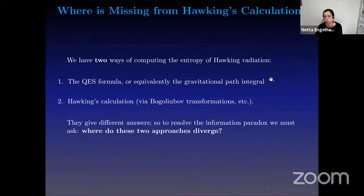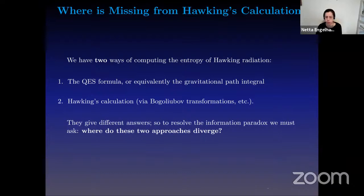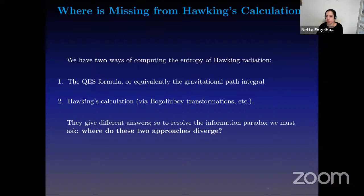One way of approaching this is to ask what's missing from Hawking's calculation. We have two ways of computing the entropy of Hawking radiation: we can use the quantum extremal surface formula, or equivalently the gravitational path integral, or we can use Hawking's calculation via Bogoliubov transformations. Of course, they give different answers. So we want to know where do these two approaches diverge? If we were to put these two approaches on the same platform, how would they differ from one another? That's step one towards understanding where Hawking went wrong and what was missing from his calculation.